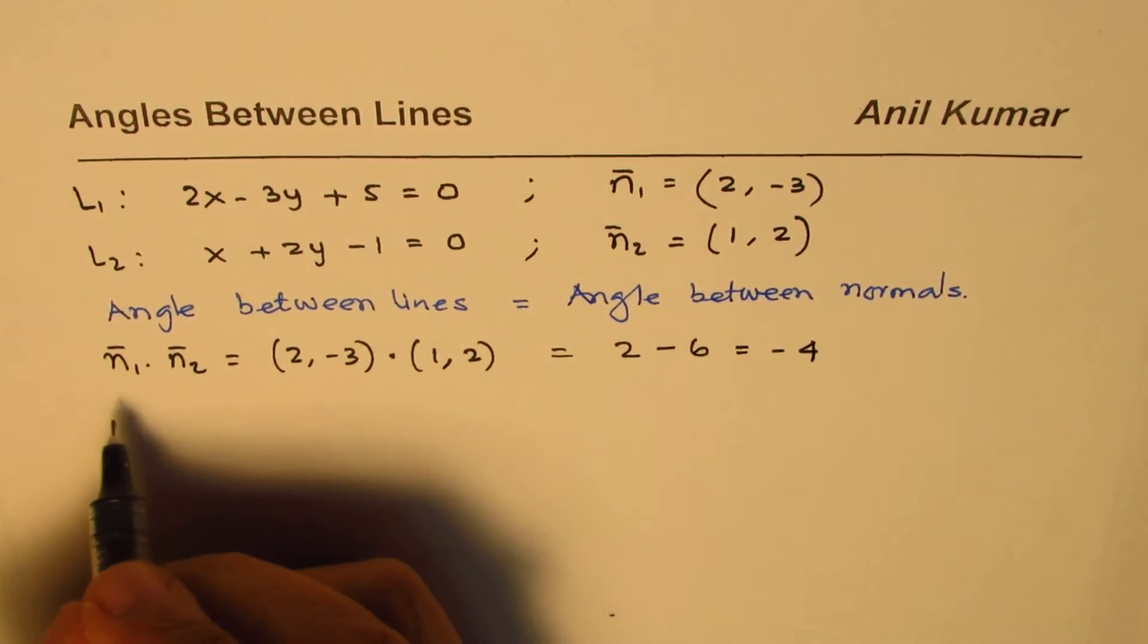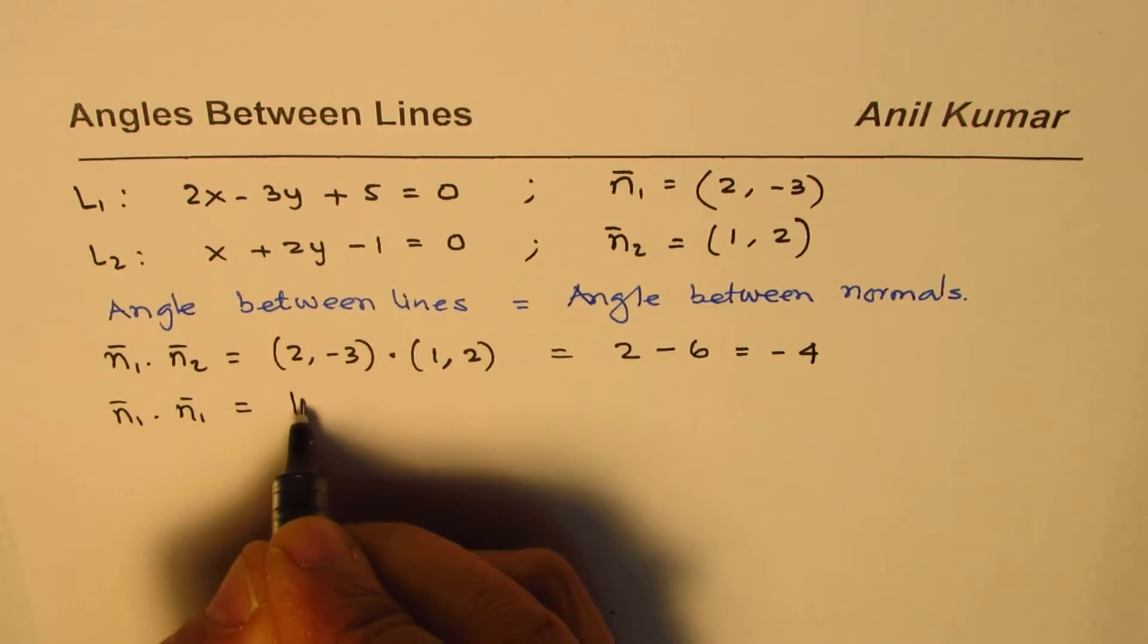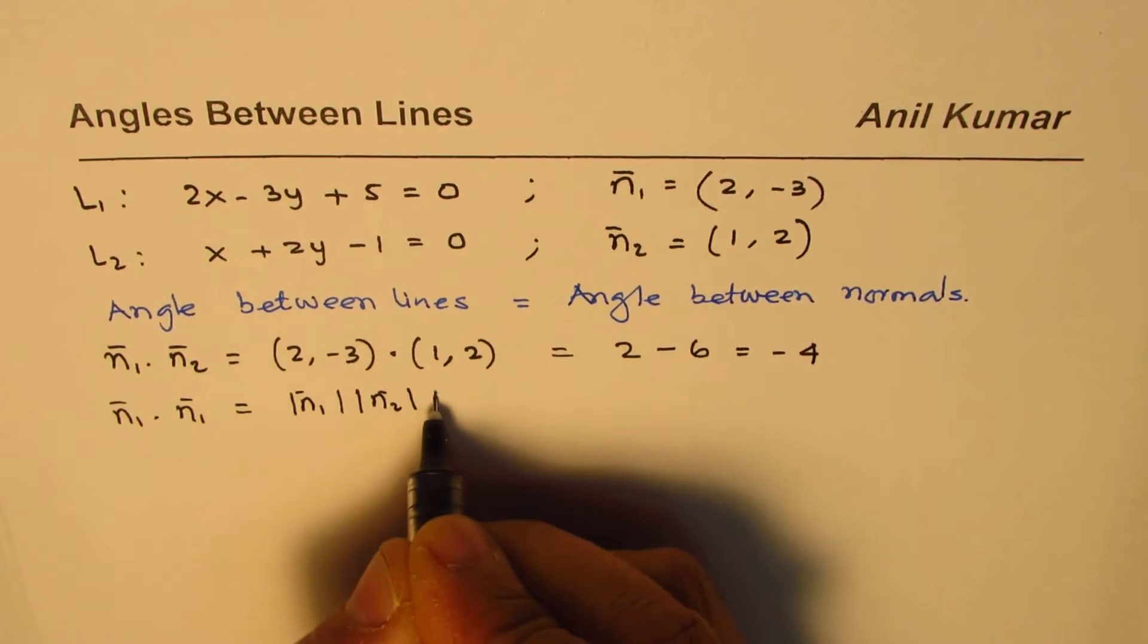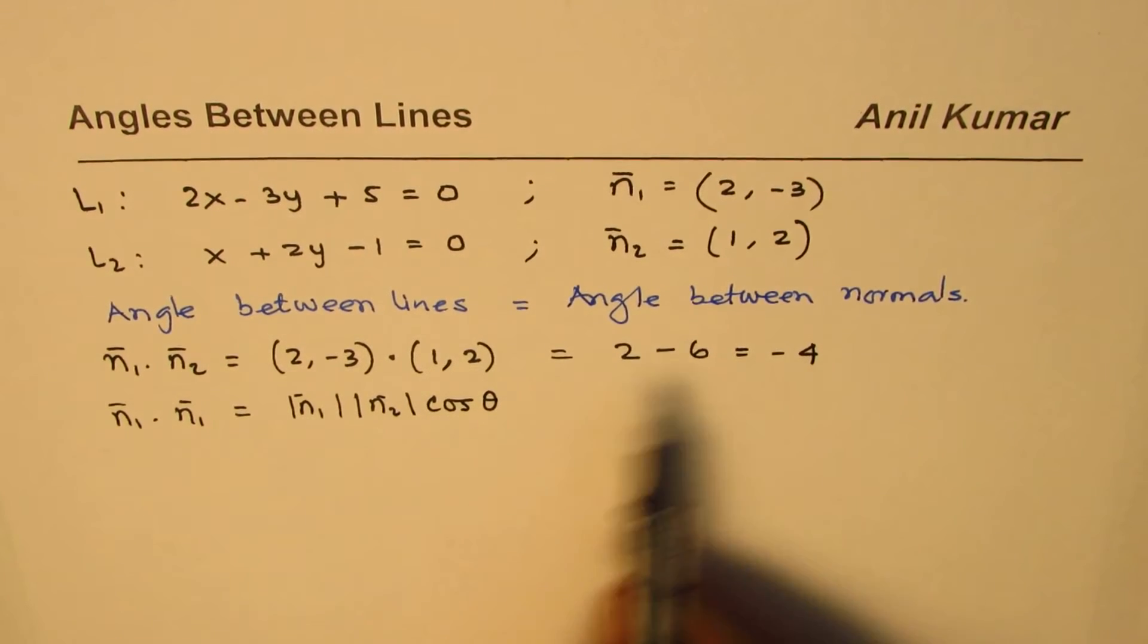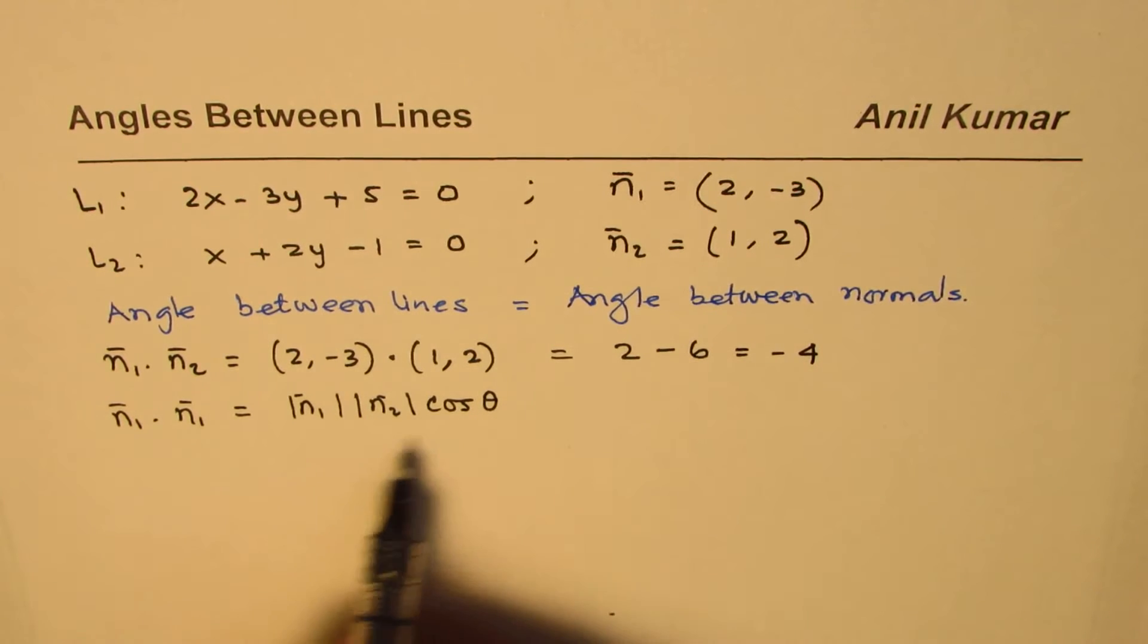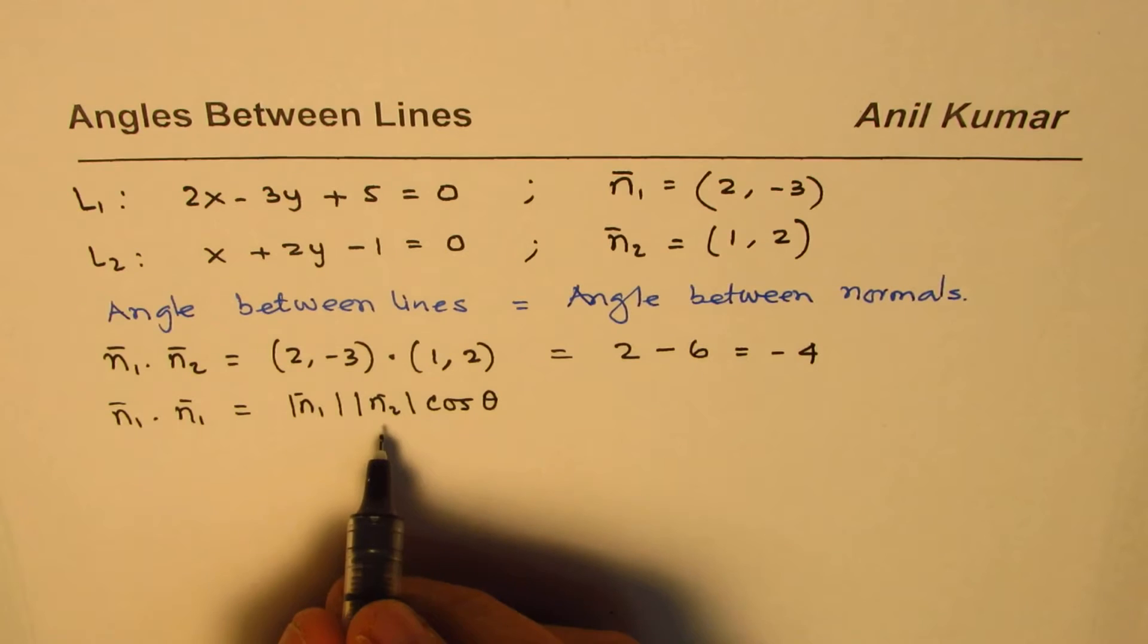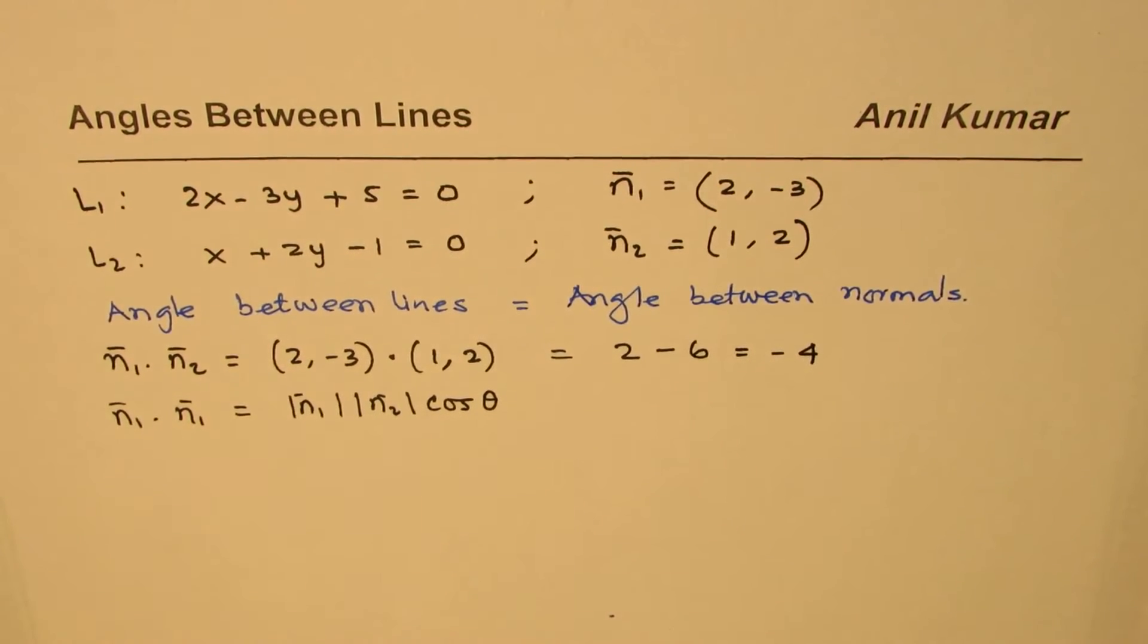Now you also know that dot product is also written as magnitude of each vector, product of magnitude of each vector times cosine theta. Now we know this dot product is minus 4 so we can write this as minus 4 equals to the magnitude of these. From here we can find the angle. So that expression dot product helps us to find the angle between the two lines.